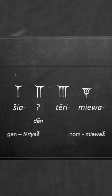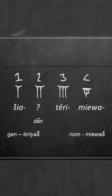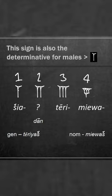Hittite words of the week, number seven. This week we're going to be looking at numbers in Hittite. The cuneiform is relatively simple here — we have the cuneiform signs for one, two, three, and four. As we can see, for one we have one cuneiform sign, for two it's doubled, and for three it's tripled.